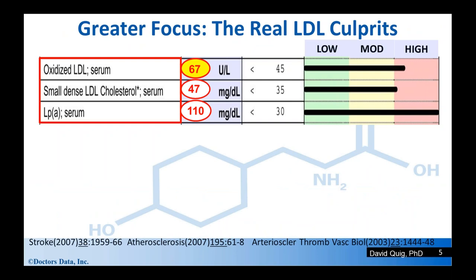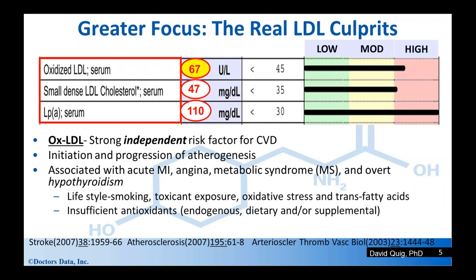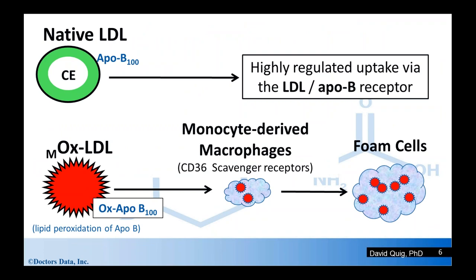Let's move on with greater focus to the real LDL culprits: oxidized LDL, small dense LDL, and LP little a. Oxidized LDL was significantly elevated in our patient. Oxidized LDL is a strong independent risk factor for cardiovascular disease — it causes initiation and progression of atherogenesis and is associated with acute myocardial infarction, angina, metabolic syndrome, and overt hypothyroidism. Elevated levels are associated with smoking, exposure to environmental toxicants, oxidative stress, trans fatty acids, and insufficient antioxidant status — both endogenous antioxidants such as glutathione and dietary or supplemental antioxidants.